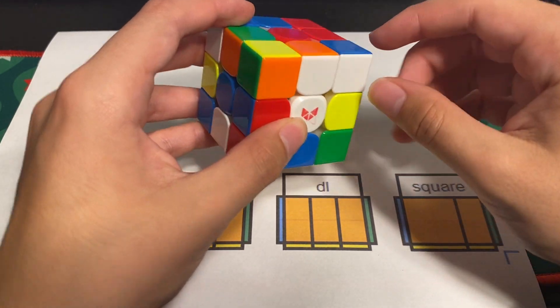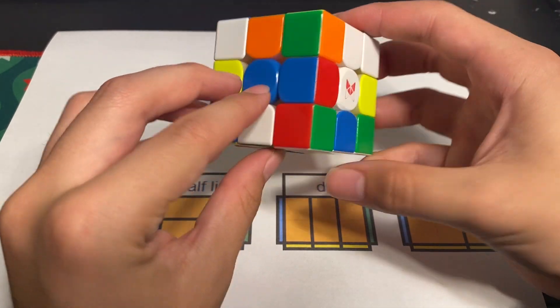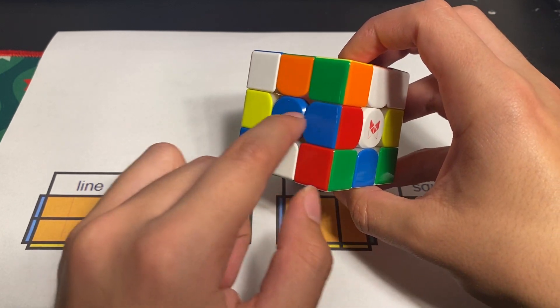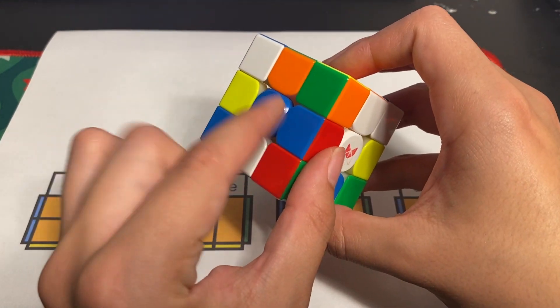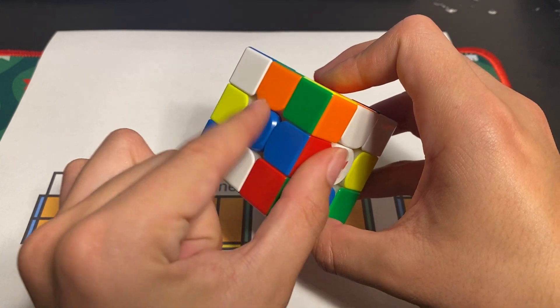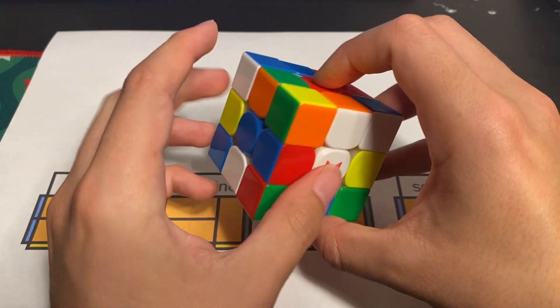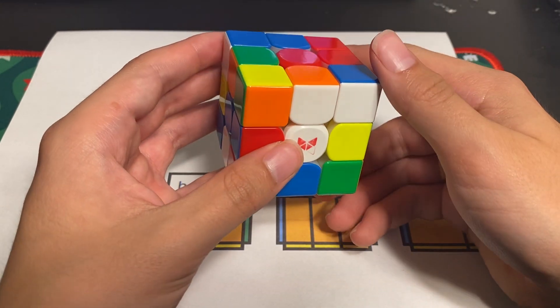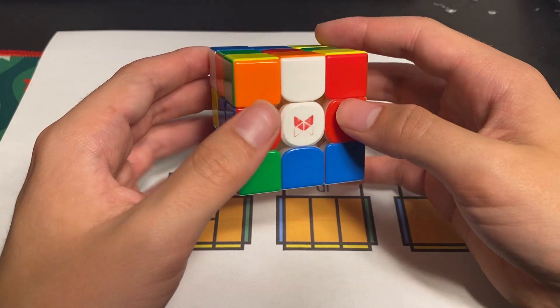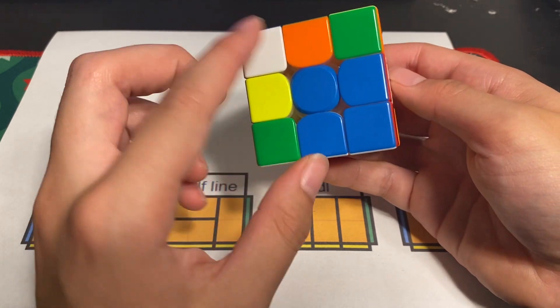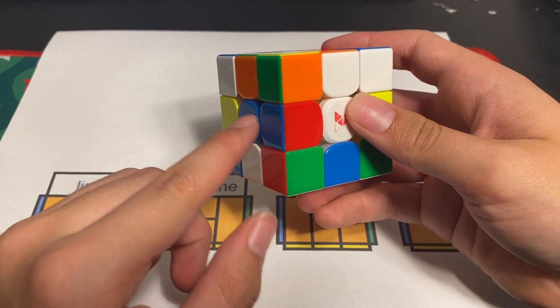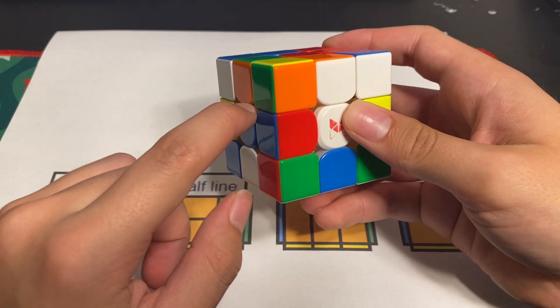So I'll show you what that would look like. Here we have this edge attached with this center and that's a great way to spot half lines. When you see an edge attached to a center that is a sign that maybe there's a nice half line there. You have this corner here and this DL edge here and all you'd have to do would be R prime D prime. So see that's a way of building your half line.